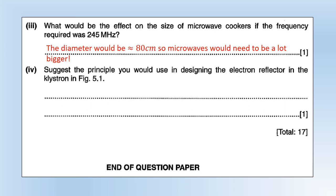Suggest the principle you would use in designing the electron reflector in the klystron in the diagram. If we're going to reflect electrons it makes sense for us to make the material out of something negative, so if we charge it up so it's a negative plate, that's going to repel the electrons and cause them to be reflected.